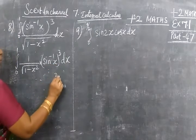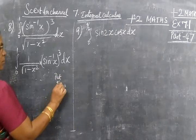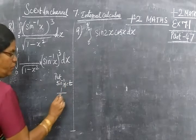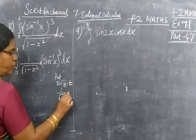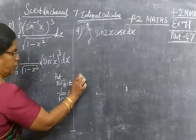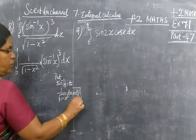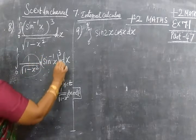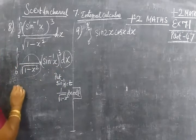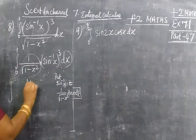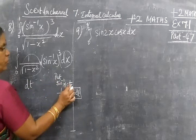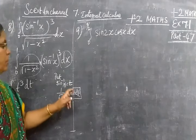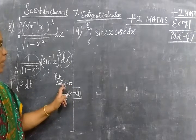So the integral is 1/√(1-x²) times sin⁻¹(x) dx. Now I will put sin⁻¹(x) equal to t. The differentiation of sin⁻¹(x) is 1/√(1-x²) dx equal to dt.